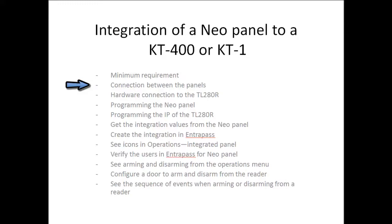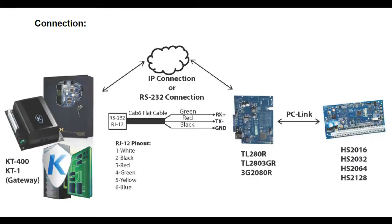Now let's take a look at the connection between the panels. From the right side, you can see the NeoPanel connects to the TL280R, and then the TL280R over Ethernet will communicate to the KT400, which then communicates with the EntraPass software. You have to remember that you'll need to use a static IP address on the KT400 or the KT1.